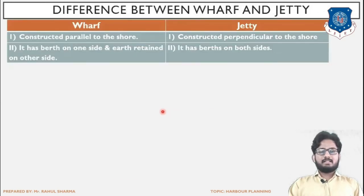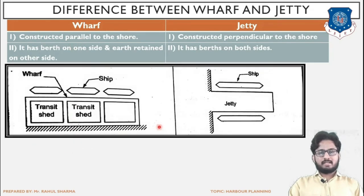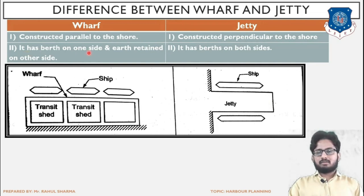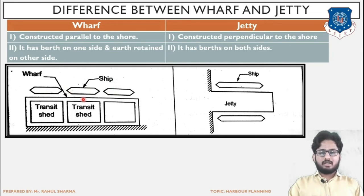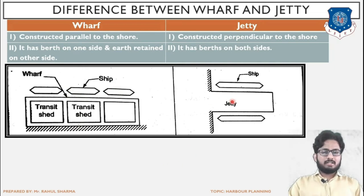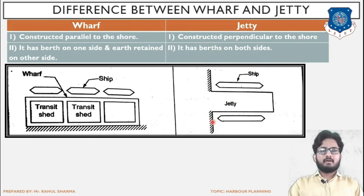To summarize: a wharf is parallel to the shore, while a jetty is perpendicular to the shore. A wharf has berthing on one side and earth retained on the other side — birthing can be done on one side only, and on the other side there is soil. A jetty, as you can see, can be berthed on both sides. So this is an important difference between wharf and jetty.